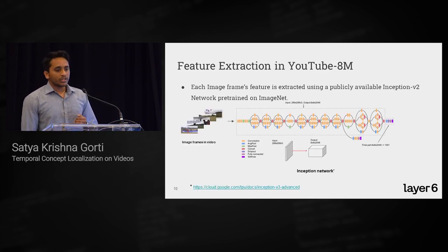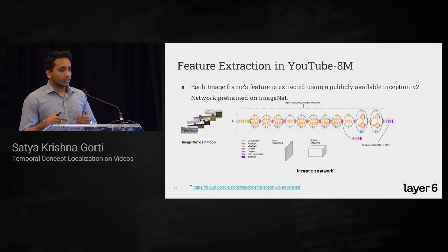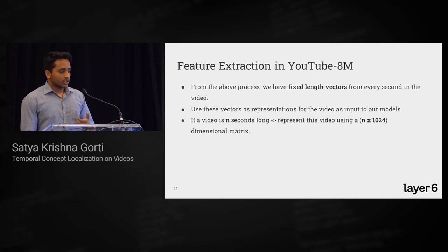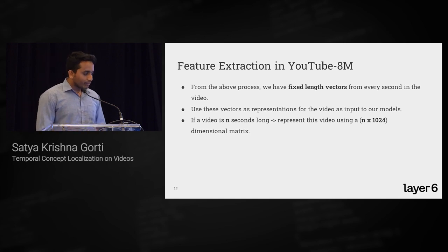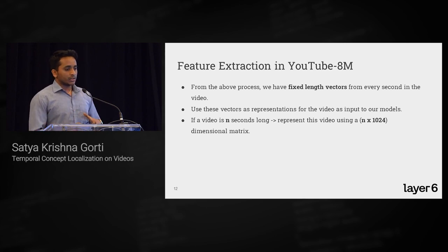Feature extraction works as follows: each image frame is passed through a publicly available Inception network pre-trained on ImageNet, cut off at a certain layer, and then principal component analysis is applied to reduce dimensions to 1,024. This gives a fixed-length representation for every image. If a video is n seconds, we have n images represented as an n×1,024 matrix, which forms the input to all subsequent models.